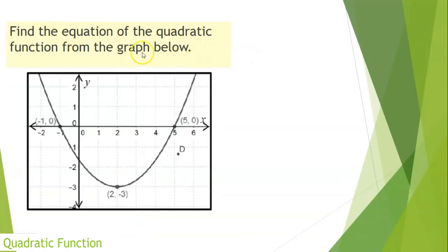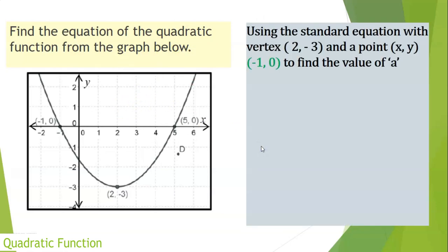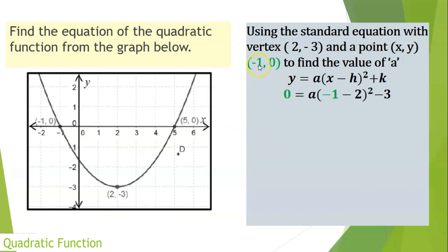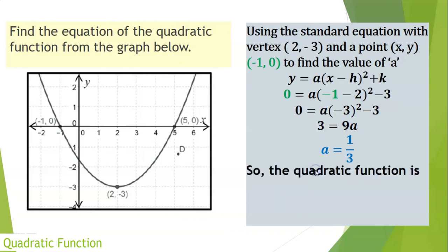Find the equation of the quadratic function from the graph with vertex (2, −3) and passing through (−1, 0). Using the vertex form y = a(x − h)² + k, substitute: 0 = a(−1 − 2)² + (−3), so 0 = 9a − 3, giving 9a = 3, or a = 1/3. Therefore the equation is y = (1/3)(x − 2)² − 3.